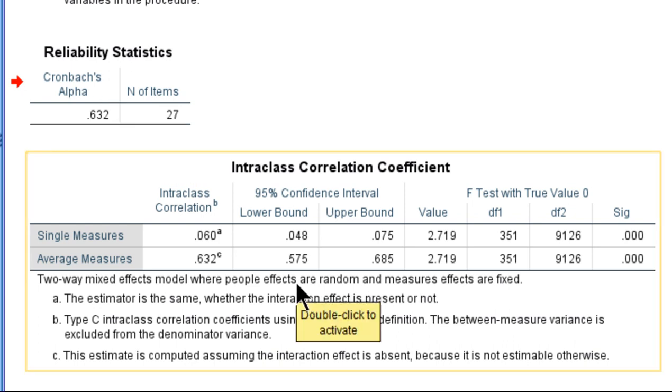And so here are the 95% confidence intervals for the Intraclass Correlation which is 0.632. So the lower bound is as low as 0.575 and the upper bound is 0.682.